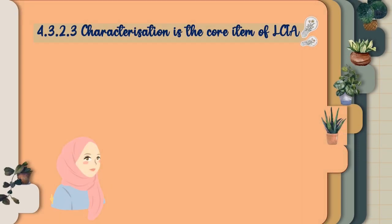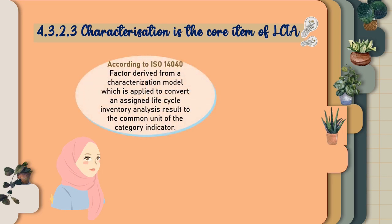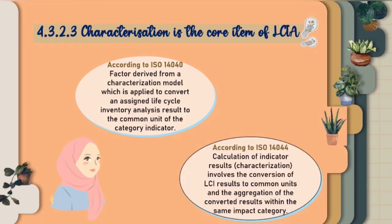Next, characterization is the core item of LCIA. According to ISO 14,040, a characterization factor is derived from a characterization model, which is applied to convert an assigned life cycle inventory analysis result to the common unit of the category indicator. According to ISO 14,044, calculation of indicator results through characterization involves the conversion of LCI results to common units and the aggregation of the converted results within the same impact category.